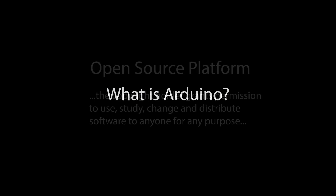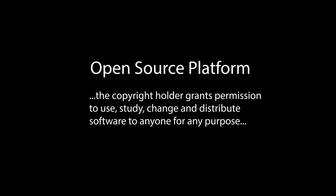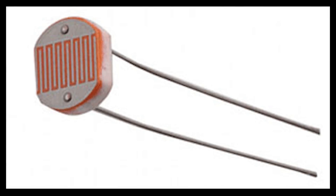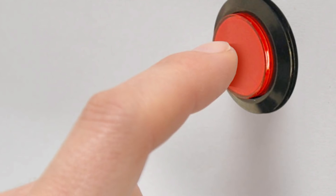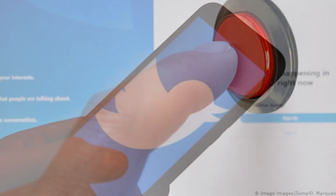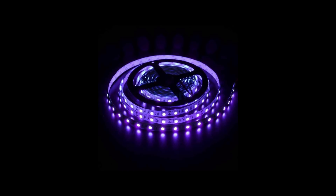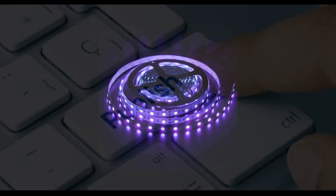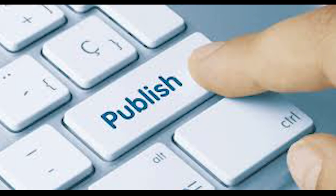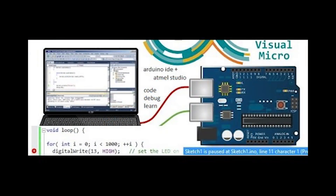Arduino is an open source electronics platform based on easy to use hardware and software. These boards are able to read inputs such as a light on a sensor, a finger on a button or even a Twitter or Facebook message, and you can turn those into an output — you can activate a motor, turn on an LED or even publish something online. You can tell your board what to do by sending a series of instructions to the microcontroller on the board.